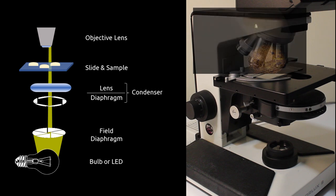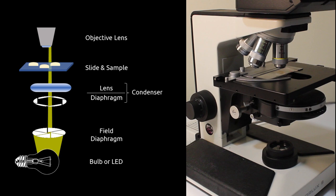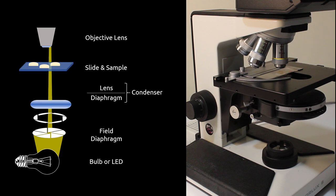The next step in the alignment process is to refine the focus of the condenser onto the field diaphragm. This ensures that we are not focused on the bulb or LED array, which can create regions of brighter and darker illumination.